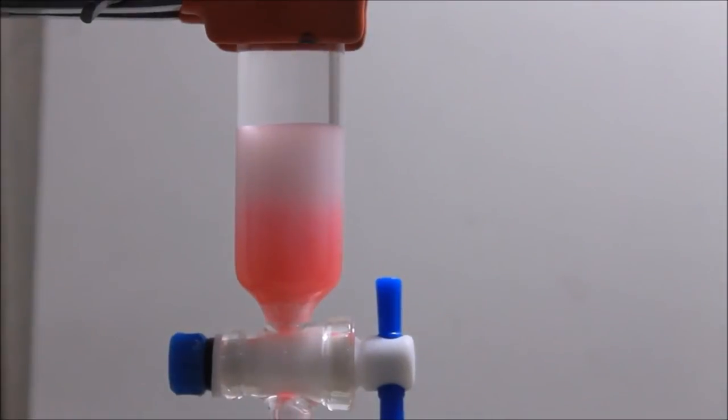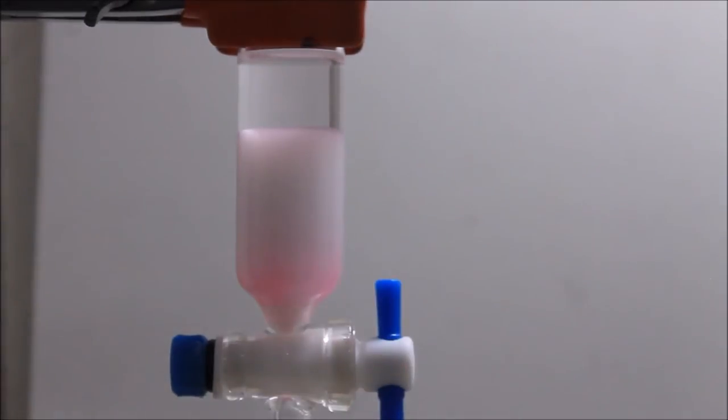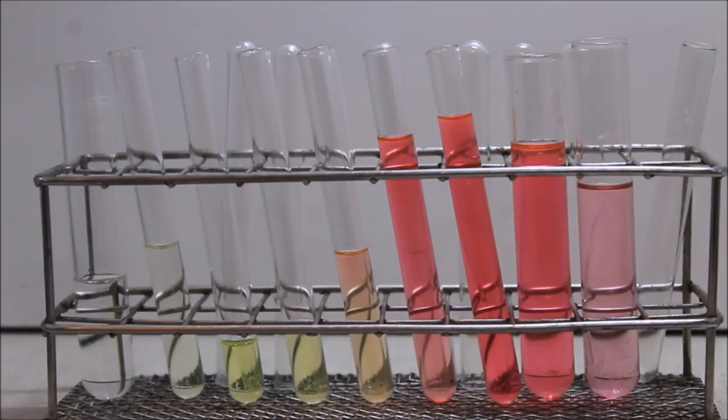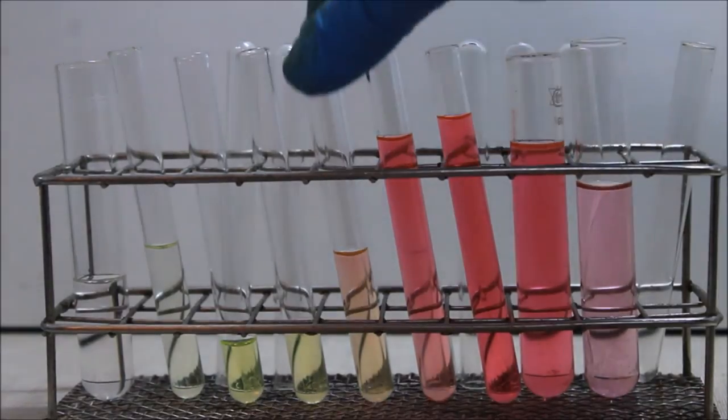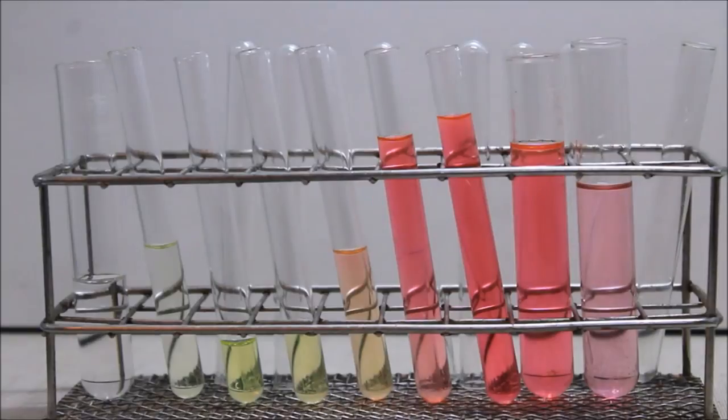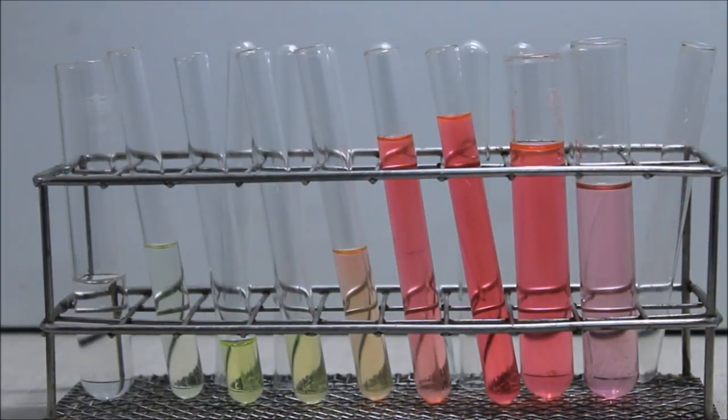Here you have a time lapse on how the safranin is eluted out from the column. Once the safranin was completely eluted out from the column, the stopcock was closed. You can clearly see that we have successfully separated the two organic dyes. Let's see it under the UV light.